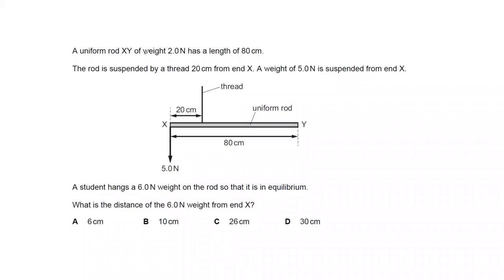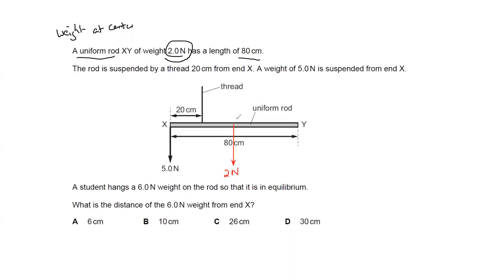Next question: a uniform rod has a weight of 2 newtons. When they use the term 'uniform,' it means the weight acts at the center. The total length of the rod is 80 centimeters, so the weight acts at the center — at the 40-centimeter mark — and that weight is 2 newtons.